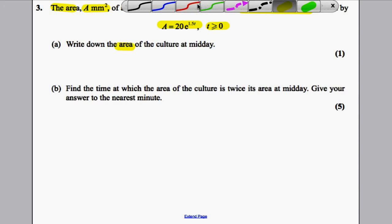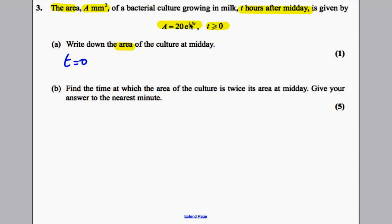Now very important here, at midday your time is clearly zero. So you substitute t=0 in here. A is equal to 20e to the 1.5 times zero, which is zero. e to the zero is one, so the answer is 20.